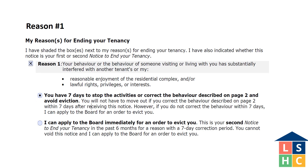Shade in the box next to reason 1 if you are giving this notice for issues such as noise, smoking, behavior, interference with access of the rental unit after proper notice has been given, or unpaid utility bills. If this is the first N5 notice you are giving to the tenant, shade in the first circle. This notifies the tenant that they can void it if they correct all the issues during the seven days following the day that they were given the notice.